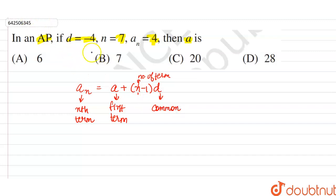Now, if you can observe, we have given D, N, An and we have to calculate A. So let's put the values in the formula.